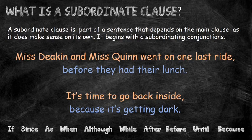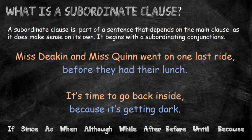Miss Deakin and Miss Quinn went on one last ride before they had their lunch. The subordinate clause — 'before they had their lunch' — did not make sense on its own without the main clause. The main clause is 'Miss Deakin and Miss Quinn went on one last ride.' Added together, it makes one expanded sentence with more information. The subordinating conjunction is 'before.' All of your subordinating conjunctions are at the bottom of the screen — we remember them as 'I saw a wabub.'